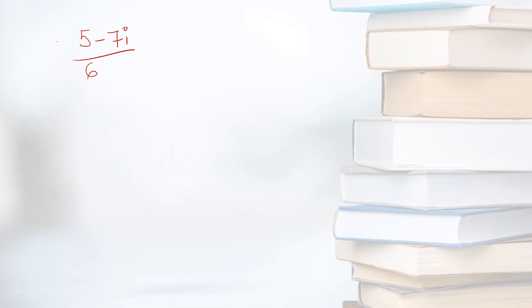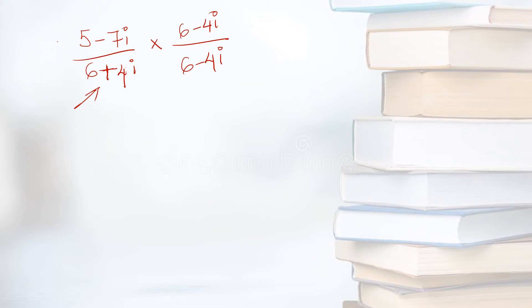Let's suppose (5 - 7i) divided by (6 + 4i). The first step is to multiply and divide by the conjugate of the denominator. The conjugate means changing the sign of the imaginary part, so you write 6 - 4i on top and the same 6 - 4i in the denominator to balance the algebraic equation. The complex numbers in the numerator are different, so multiply them using the distributive property.